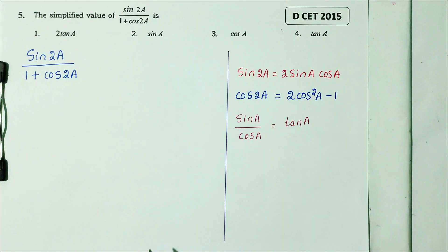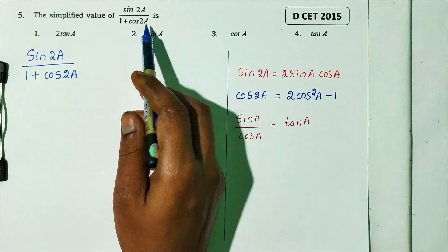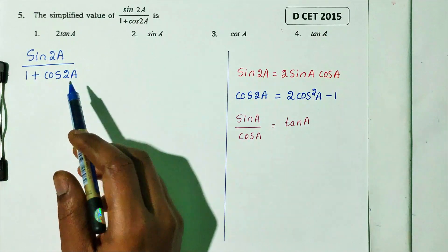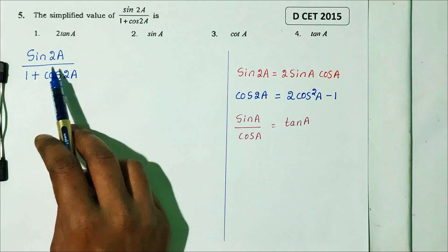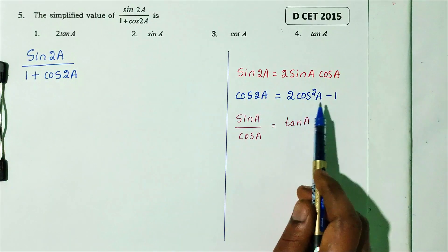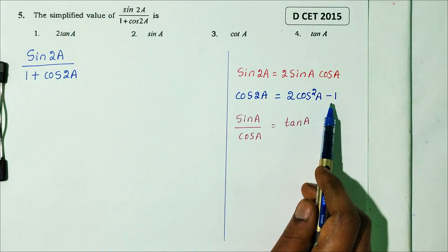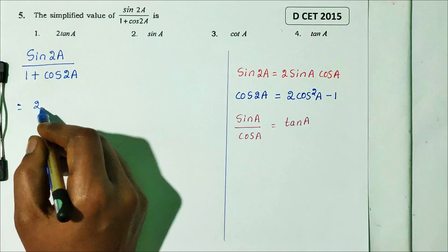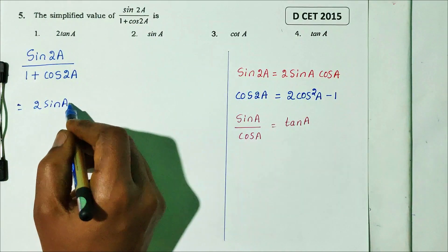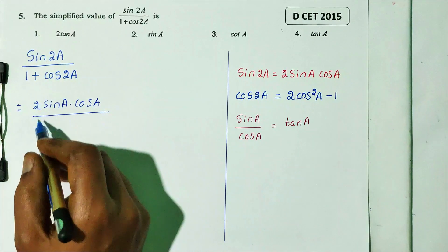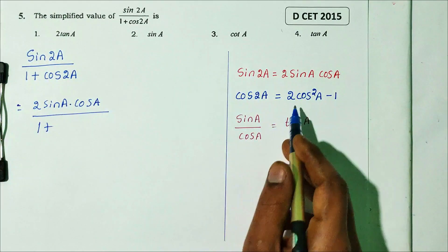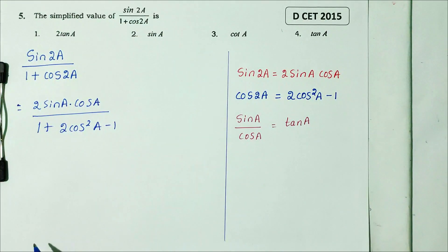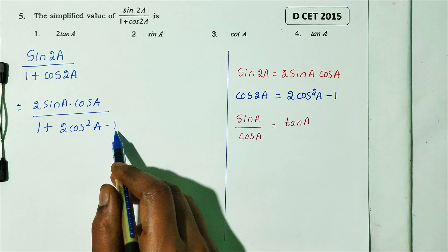Question number 5: find the simplified value of sin2A divided by (1 + cos2A). This is from DCT 2015. We apply the double-angle formulas: sin2A = 2sinA·cosA, and cos2A = 2cos²A − 1, so 1 + cos2A = 1 + 2cos²A − 1 = 2cos²A.